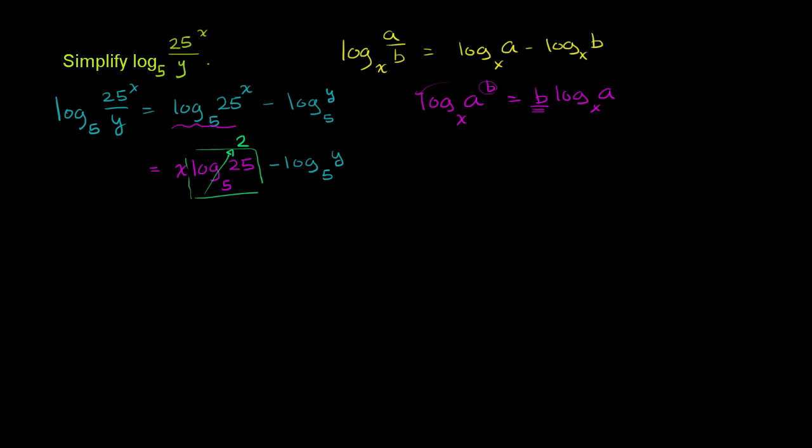So then we are left with, this is equal to 2, and I'll write it in front of the x now, 2 times x minus log base 5 of y. And we're done.